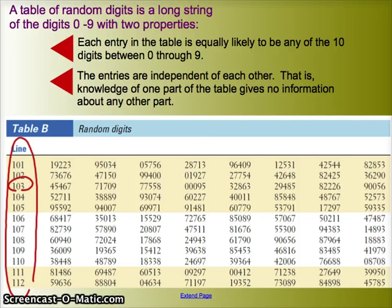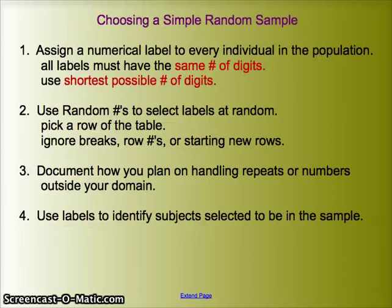What does it mean to be random? Well, it means each entry in the table is equally likely to be any number between 0 and 9. And each entry is independent of the next. So the fact that one number is 0 has no impact on the next number. In fact, it's possible even in a random number table to have three zeros in a row.